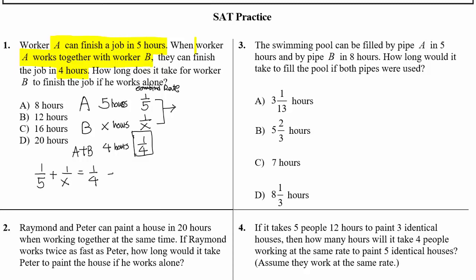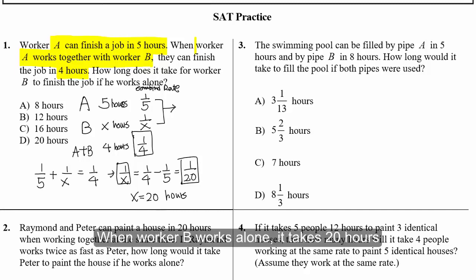So one-fifth plus one over X equals one-fourth. From here, one over X equals one-fourth minus one-fifth, which equals one over 20. So X equals 20 hours. When Worker B works alone, it'll take 20 hours.